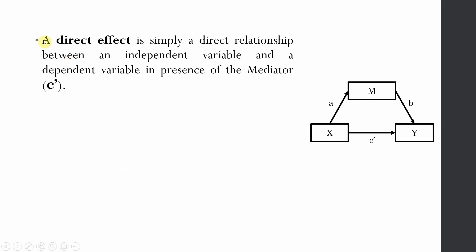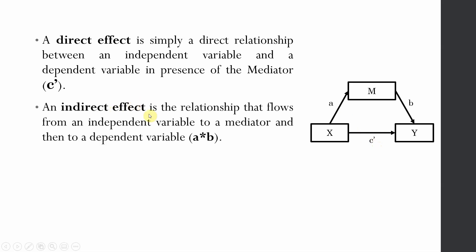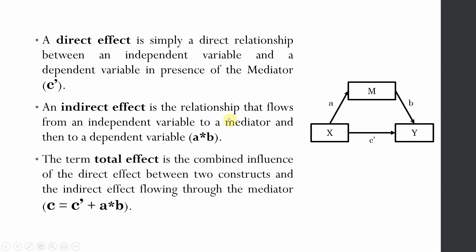A direct effect is simply a direct relationship between an independent variable X and a dependent variable Y in the presence of the mediator. When the mediator is present in the equation, the relationship between X and Y is referred to as the direct effect, represented by c-prime. An indirect effect is the relationship that flows from X to the mediator M and then to the dependent variable Y — you calculate it by multiplying a with b. The total effect is the combined influence of direct effect c and indirect effect a×b.